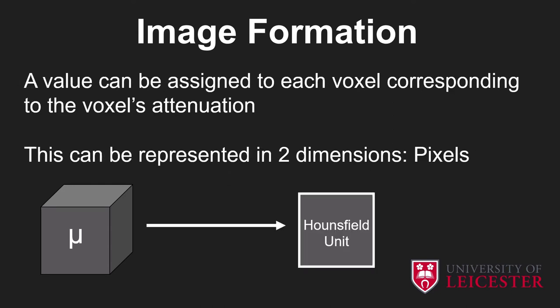We can give a value to the level of attenuation — how much each cube blocks x-rays — and that can be represented in two dimensions with a pixel. By convention, substances that don't attenuate x-rays very much have a low value, and substances which really block or stop x-rays completely have a very high value. These values, or Hounsfield units, typically range from the minus thousands to the plus thousands.